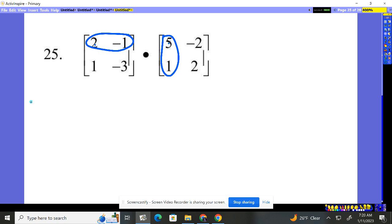So, 2 times 5 is 10. Negative 1 times that 1 is plus a negative 1. I'm now going to do first row times the next column. So, 2 times negative 2 is negative 4. Negative 1 times 2 is negative 2.